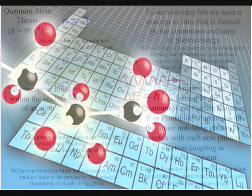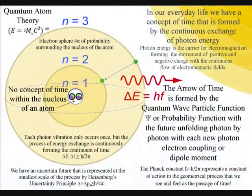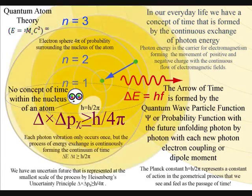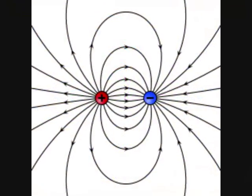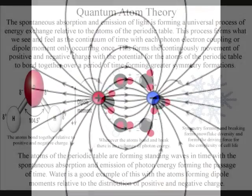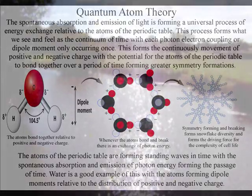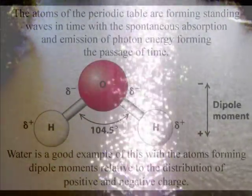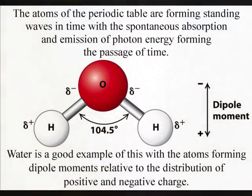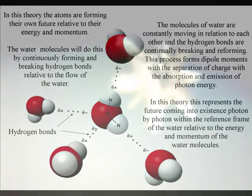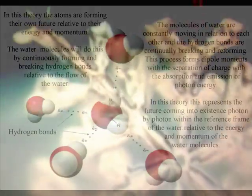Whenever the bonds between the atoms form and break, there is an exchange of photon energy, forming photon-electron couplings or dipole moments. This forms the movement of electric charge, with atoms being able to form permanent dipoles and permanent dipole-induced dipole interactions, or what I like to call standing waves in time. Water is a good example of this, with the atoms forming a dipole structure with hydrogen bonds forming and breaking relative to the geometry of the structure.